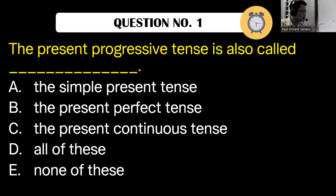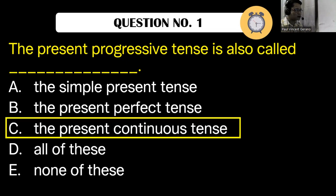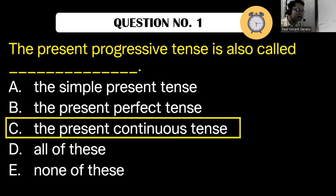The answer is letter C, the present continuous tense. Ronami, Carlito, and Leo all answered letter C, and that is the correct answer. The present progressive tense is also called the present continuous tense.